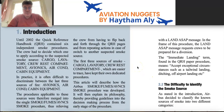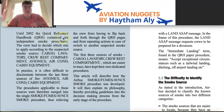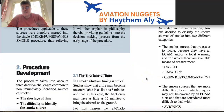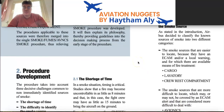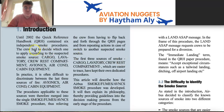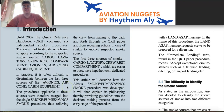Until 2002, the Quick Reference Handbook contained six independent smoke procedures — three for cargo, lavatory, and crew rest compartment, and three for avionics, air conditioning, and cabin equipment. This was a hectic process: the crew had to decide which one to apply according to the suspected smoke source. In practice, it is often difficult to discriminate between avionics, air conditioning bay, and cabin equipment.